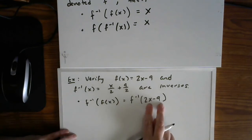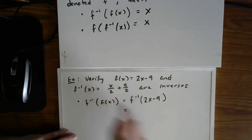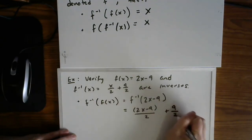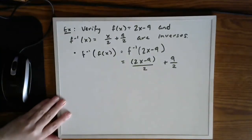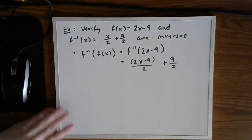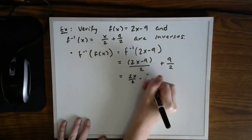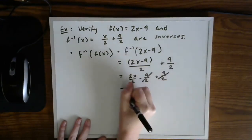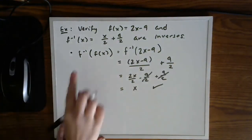Now take this input and plug it in to the inverse function wherever you have a variable. So 2x minus 9 divided by 2 plus 9 halves. So here what you'll notice is upon simplification, 2x over 2 minus 9 halves plus 9 halves simplifies to x.